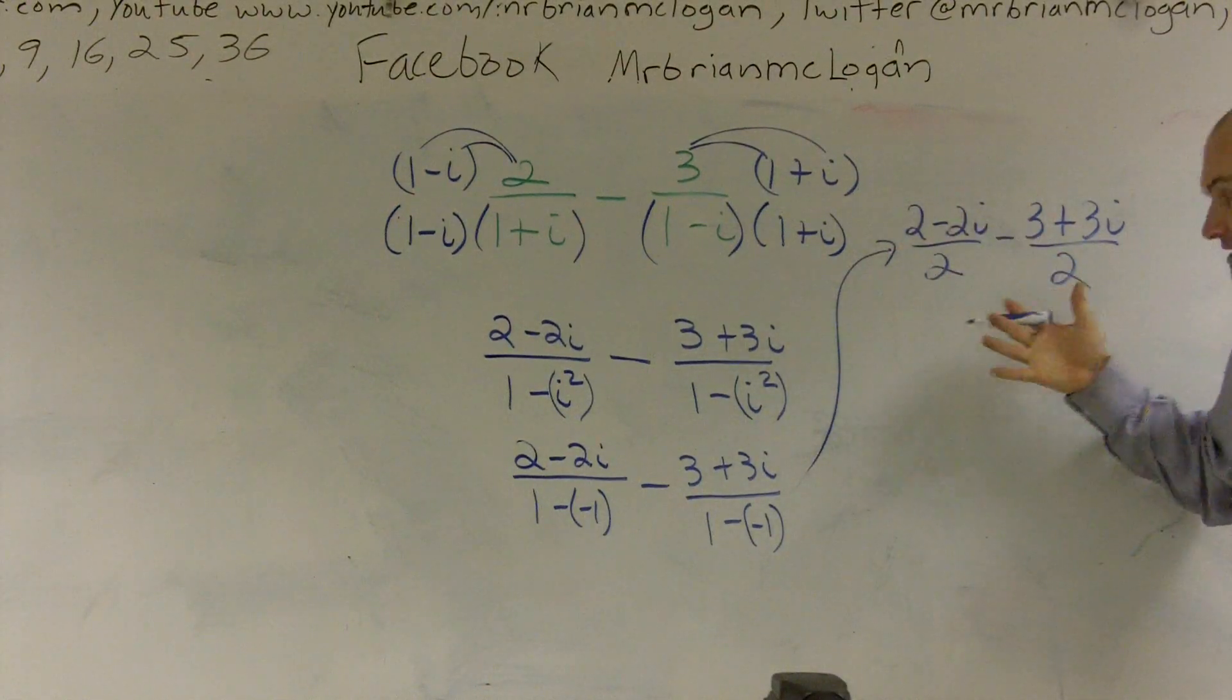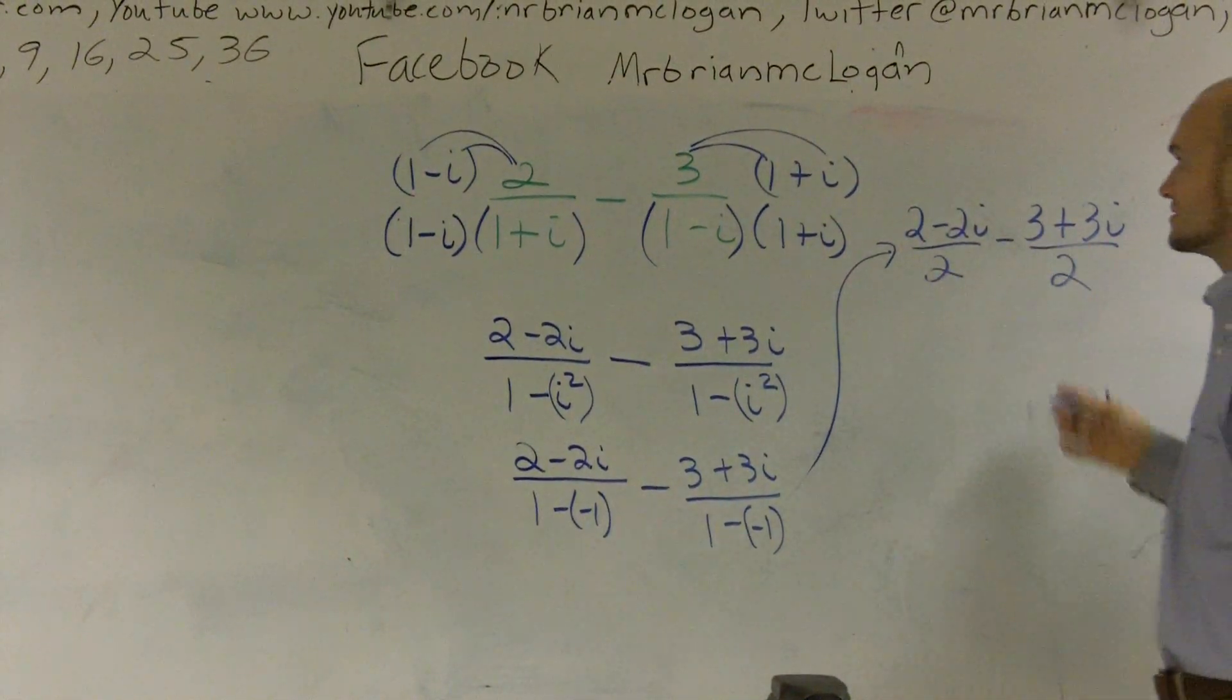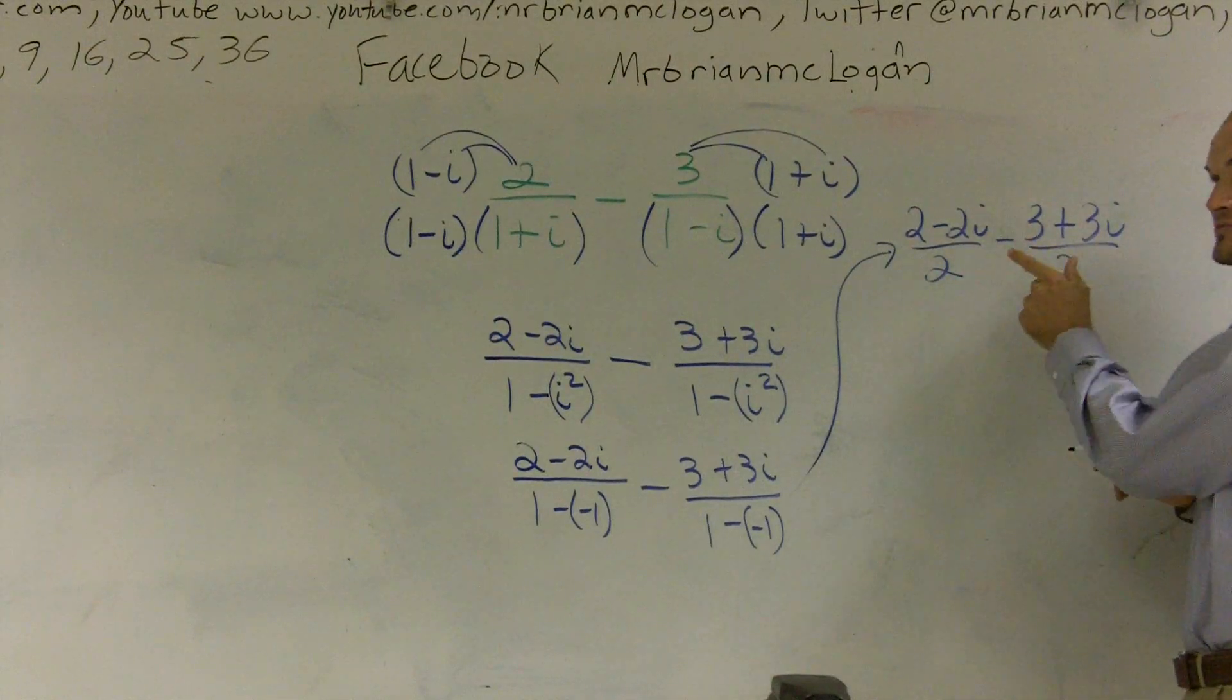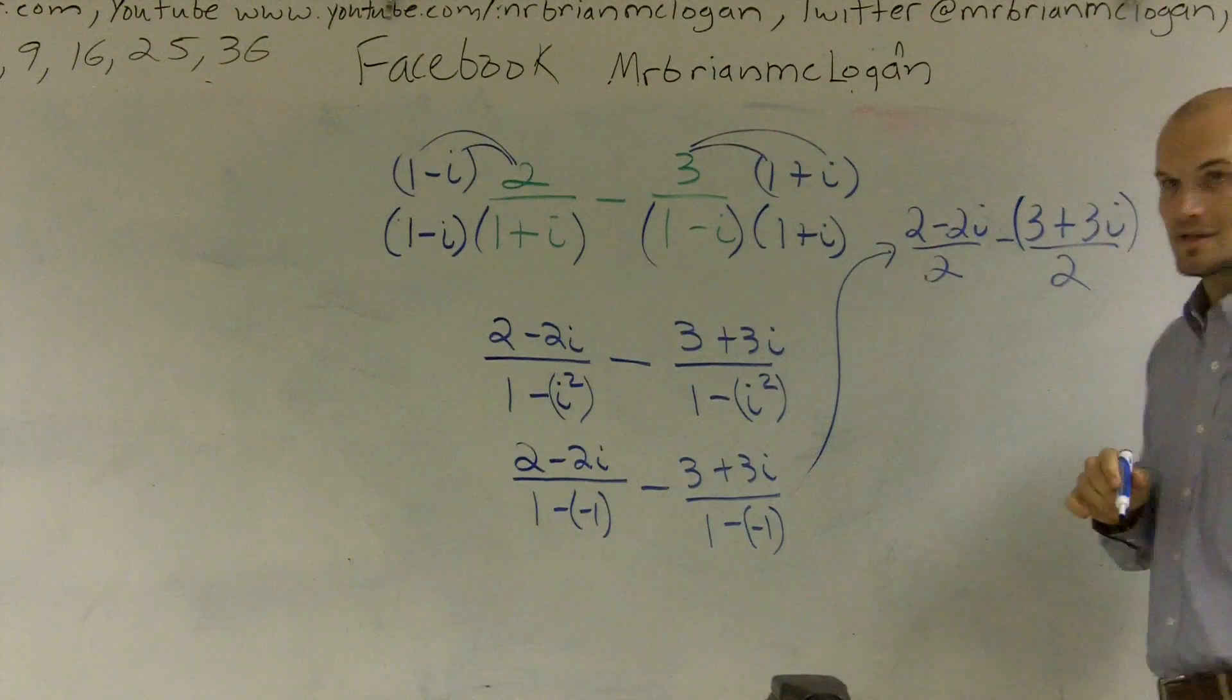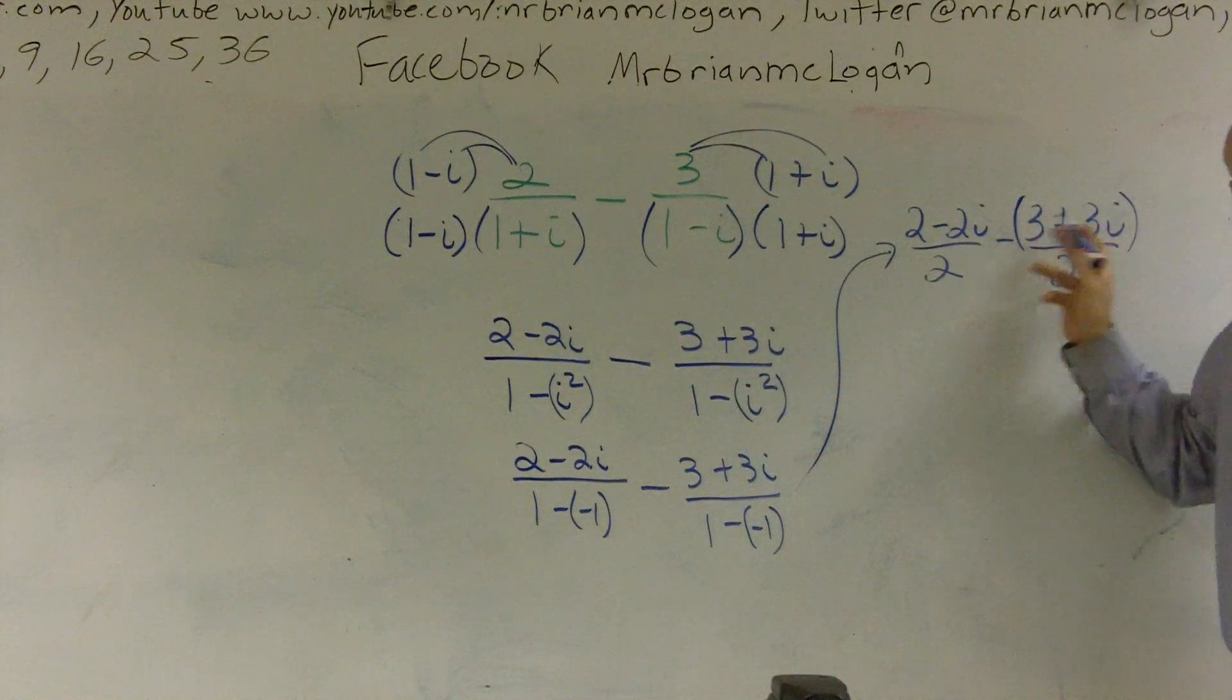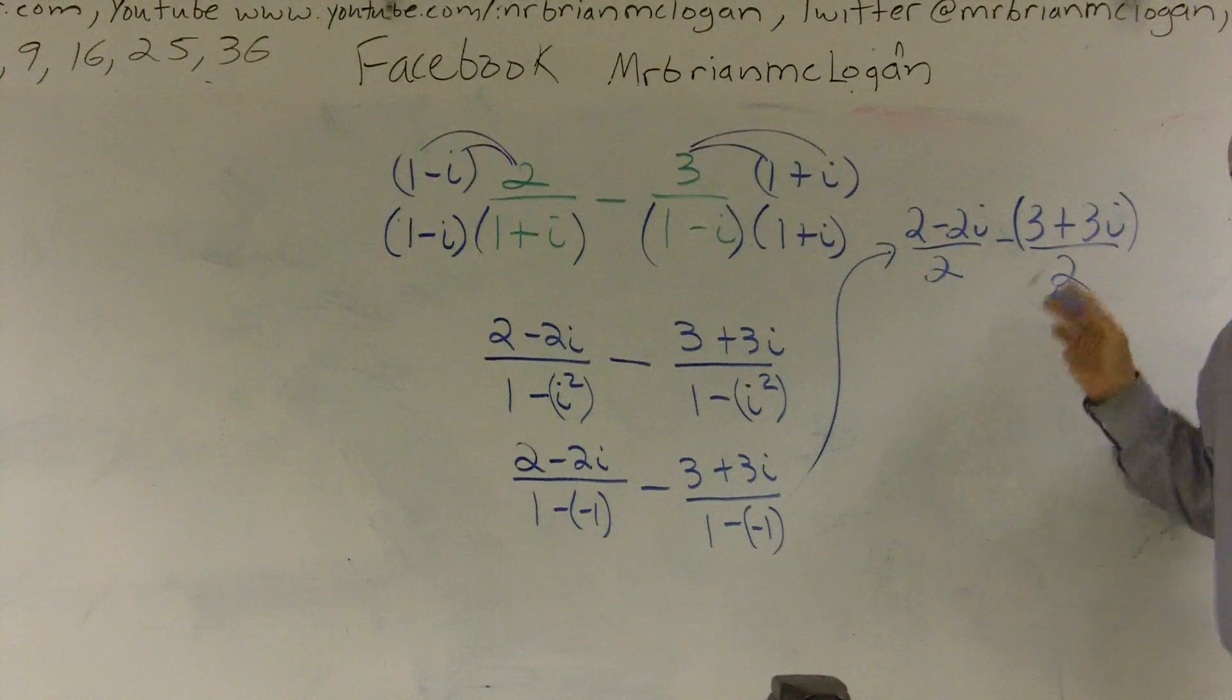Now that you have the same denominator, you can combine the fractions. Now remember, you can combine the fractions, but remember we're subtracting. Now there's a big important part we need to make. We're subtracting this whole top. Right? And it's just not a negative 3. You're subtracting a 3 and you're subtracting a 3i.